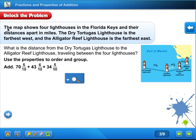The question says, the map shows four lighthouses in the Florida Keys and their distances apart in miles. So right here, the distance is apart in miles. The Dry Tortugas Lighthouse is the furthest west and the Alligator Reef Lighthouse is the furthest east. So we have that information. Now let's see what the question is asking.